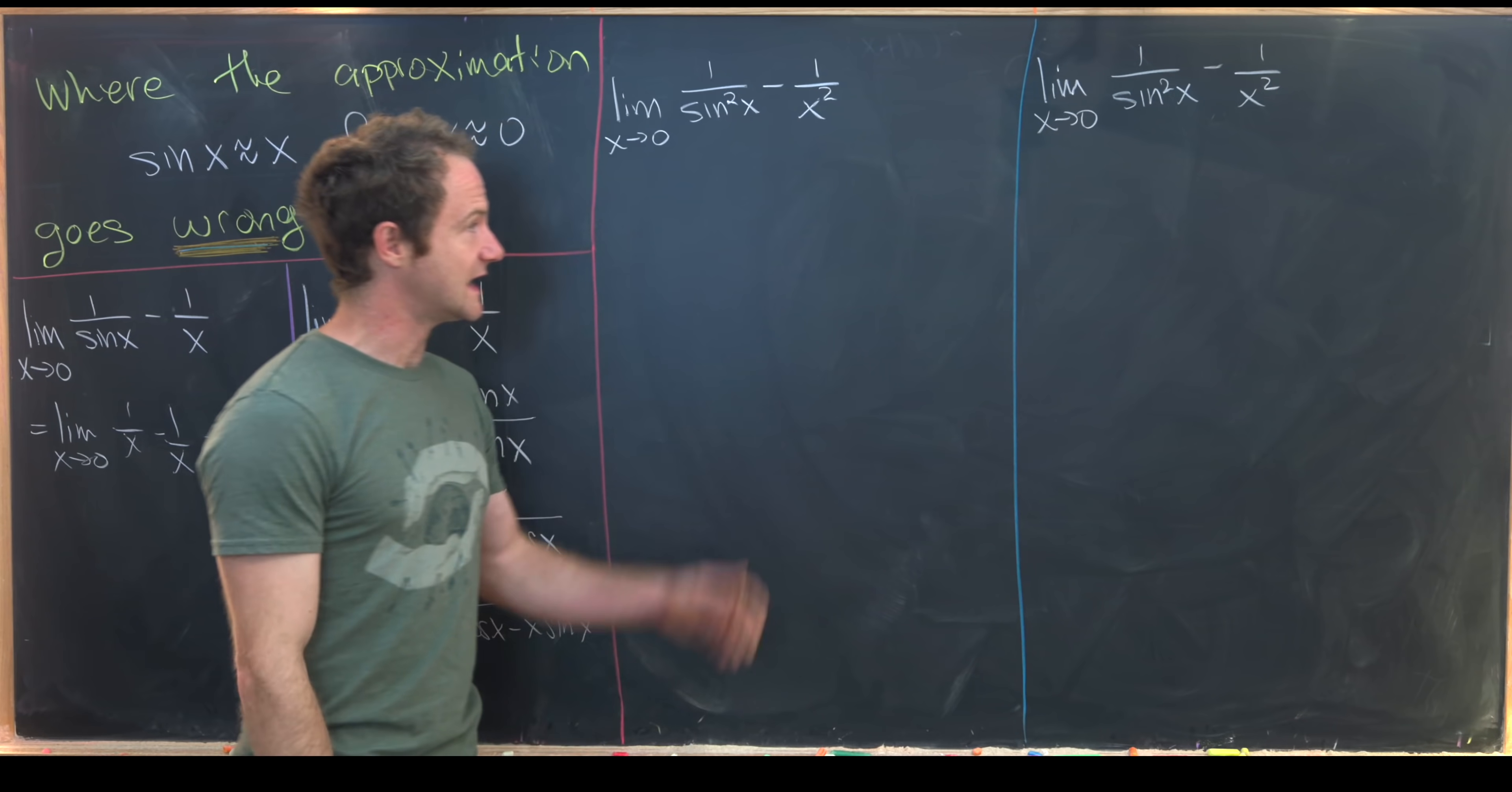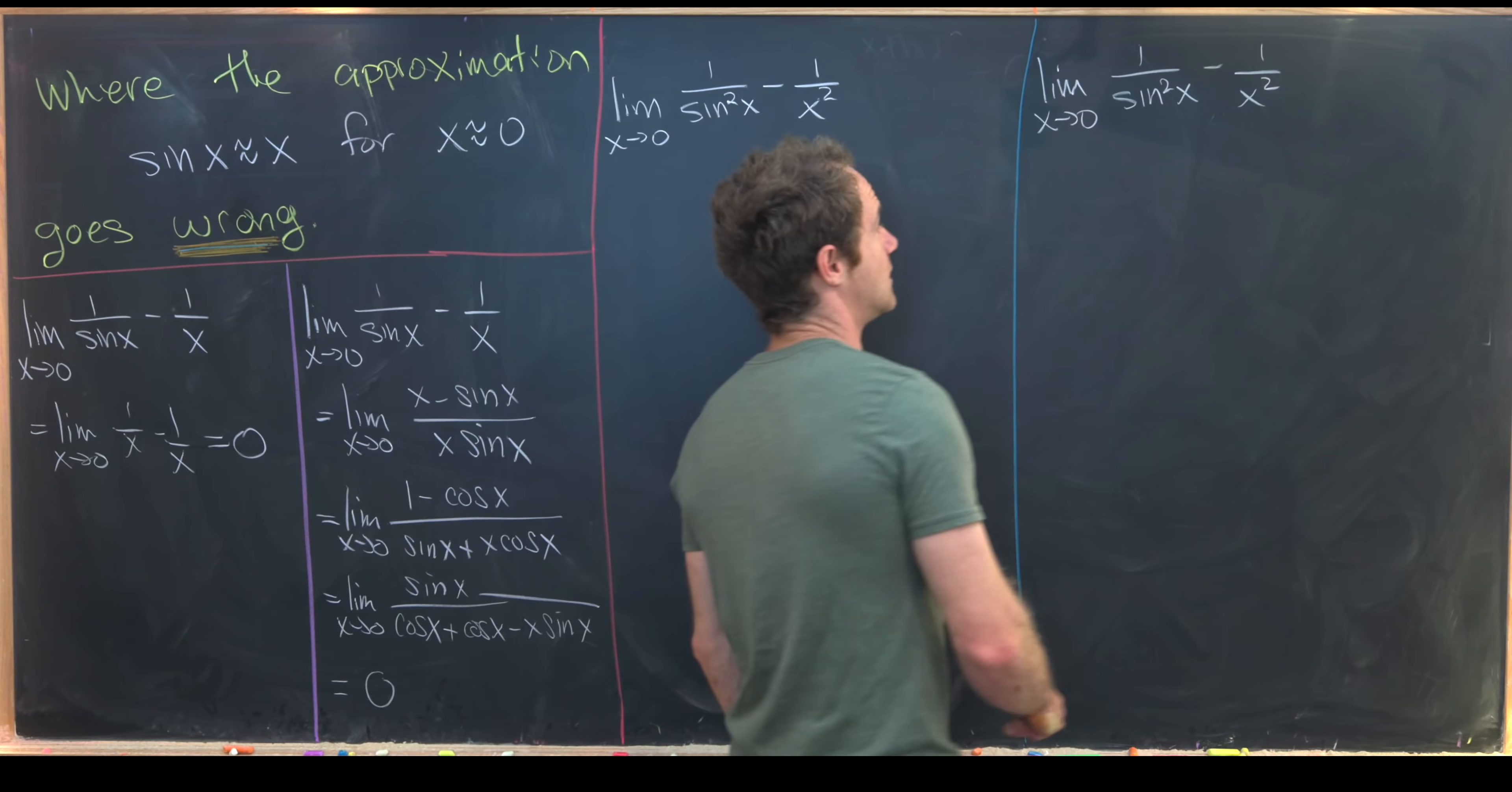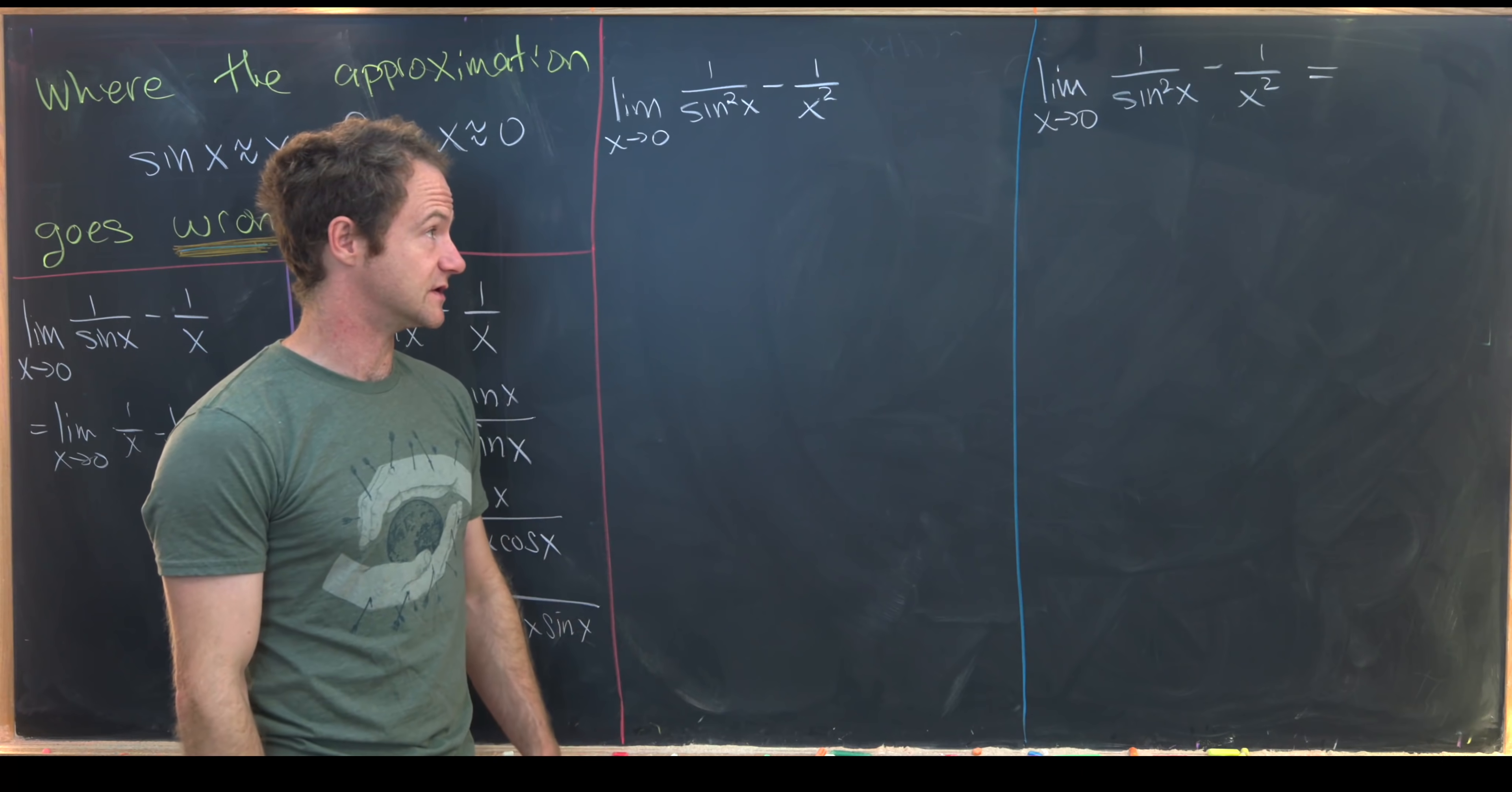Okay, let's see a related limit. And that is one over sine squared of x minus one over x squared. So if we apply the small angle approximation, which is sine of x is approximately equal to x for very small values of x,